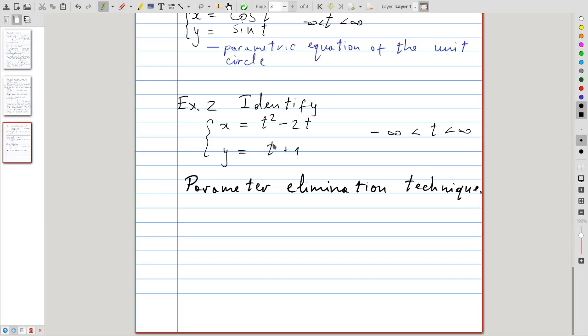So the idea is that we will eliminate the parameter t and instead use this equation of a curve to a regular equation where the two variables x and y are directly related. One is a function of the other.